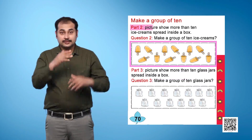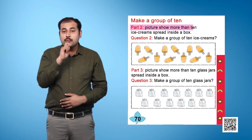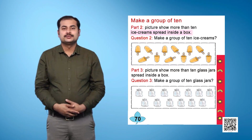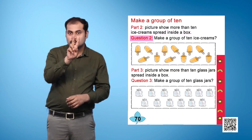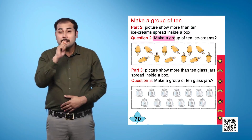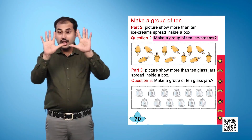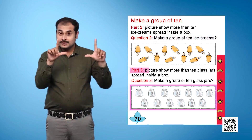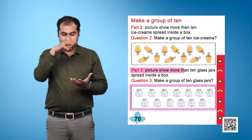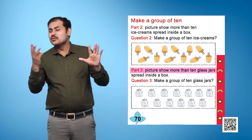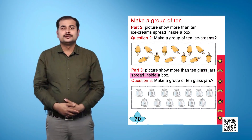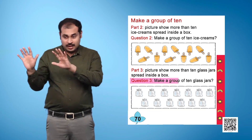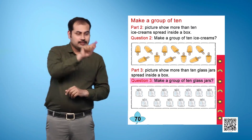Part 2 picture shows more than 10 ice creams spread inside a box. Question 2: Make a group of 10 ice creams. Part 3 picture shows more than 10 glass jars spread inside a box. Question 3: Make a group of 10 glass jars.